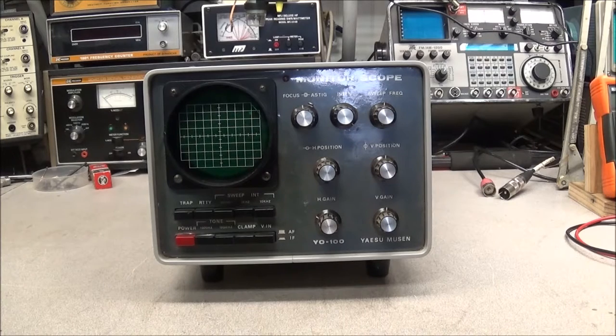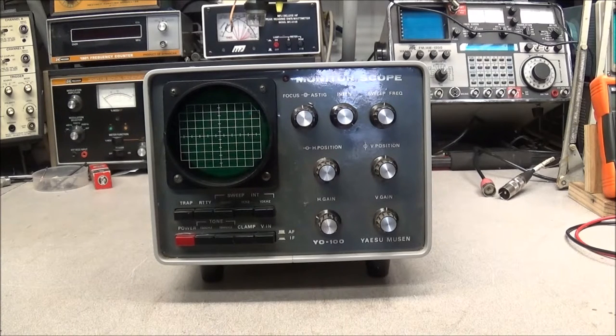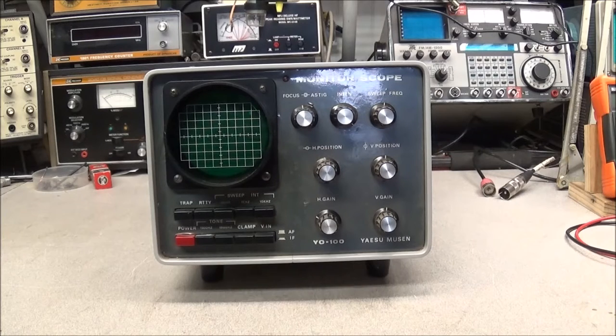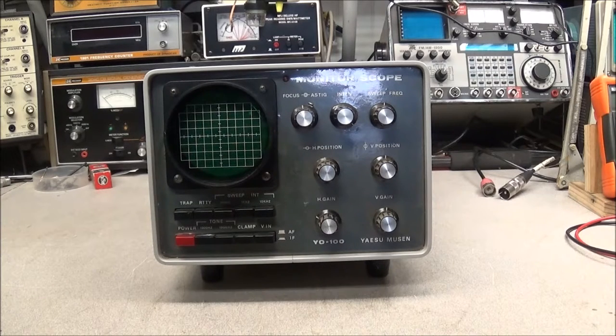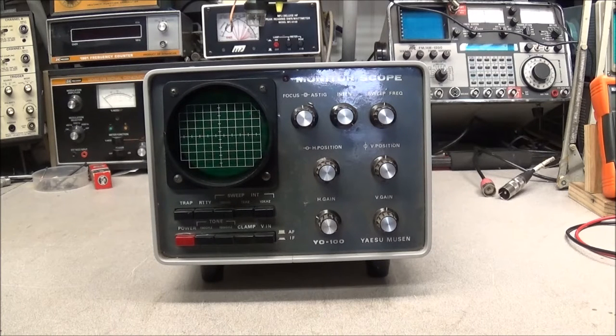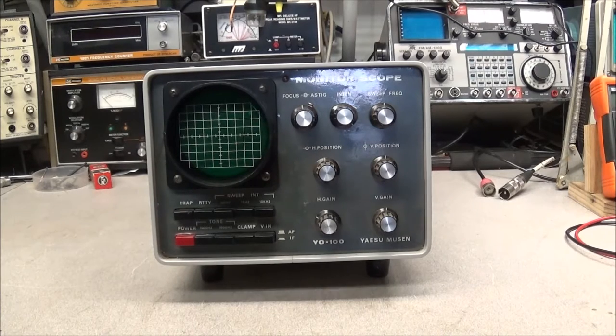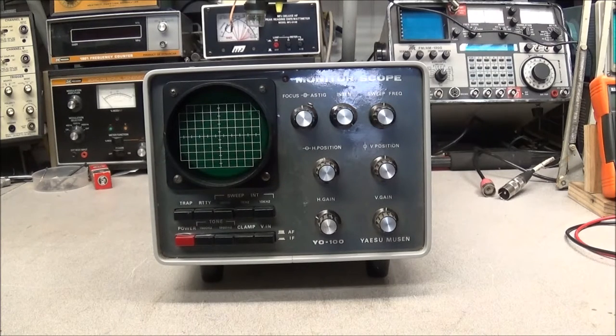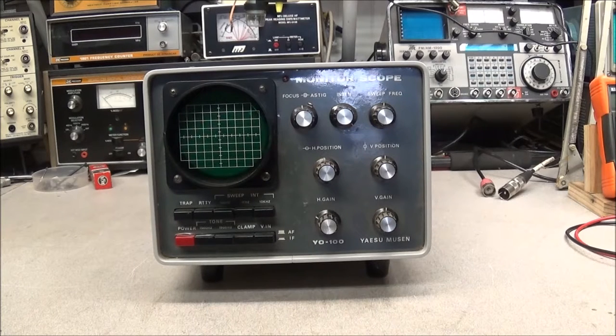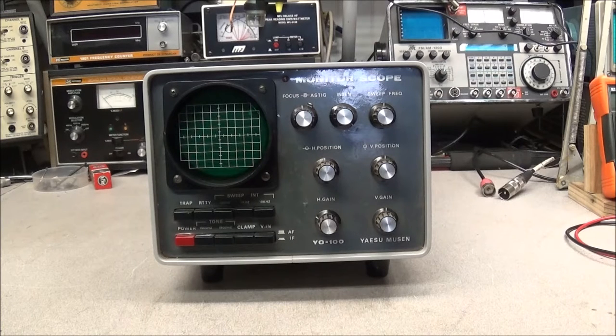Today's video we're going to take a peek at the Yaesu YO-100 monitor scope. A monitor scope is basically just a simple oscilloscope that is used to monitor radio RF transmissions from your ham radio or CB radio, and you can look at your signal and see if it's flat topping or how the signal is peaking.